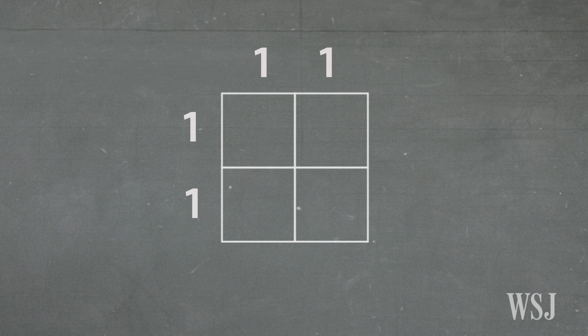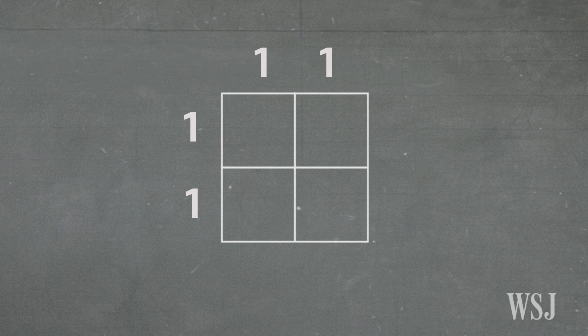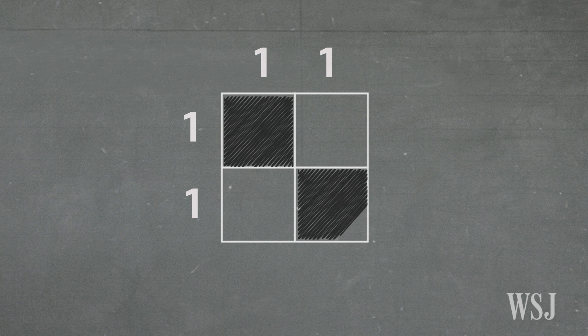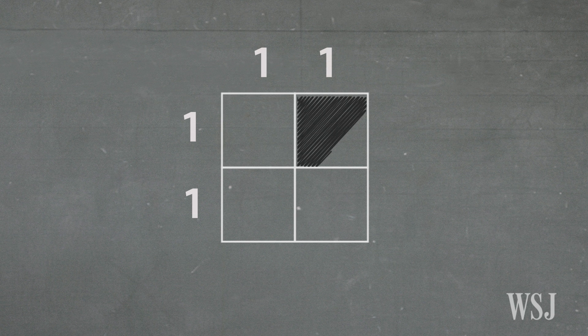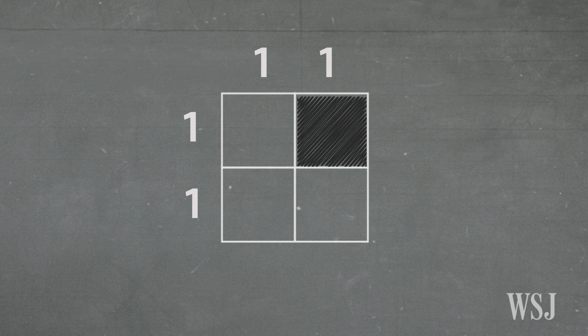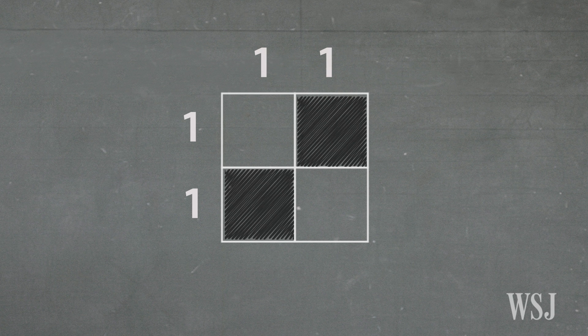So our puzzle would look like this with the one labeling every row and column. There are two possible ways of satisfying all these clues. We could either color in the top left and the bottom right, or vice versa, the top right and the bottom left. So that has an ambiguous solution, so two is not the answer to our puzzle.